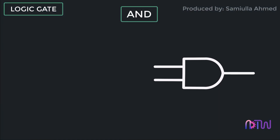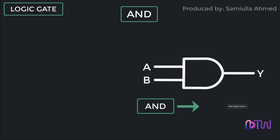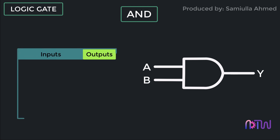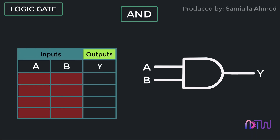Similar to the OR gate, the AND gate also has two inputs A and B, and one output Y. The working of the AND gate is based on the mathematical meaning of AND, that is multiplication. For the AND gate to give an output, both inputs A and B should have a signal. The logic table for the AND gate can have four combinations of input. The first input: A equals zero and B equals zero — since both A and B have no signal, the output Y will be zero.